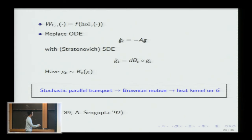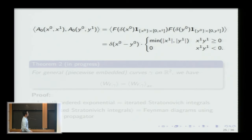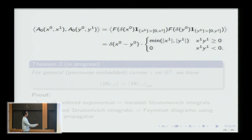The mathematicians responsible for this probabilistic point of view are Driver and Sagupta, students of Leonard Gross. Working in the continuum using this setup, you get the exact same answers as the lattice approach. In this axial gauge, the two-point function of A is: a delta function in the x₀ direction times min(y₁, y₂) — the covariance of Brownian motion.